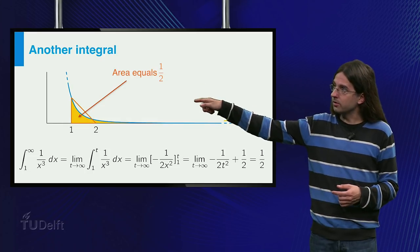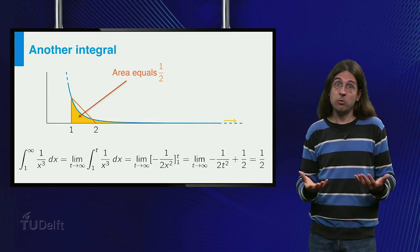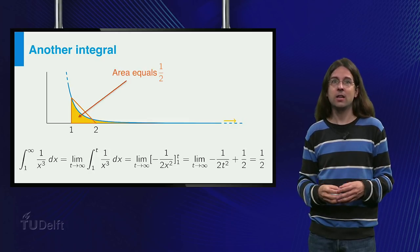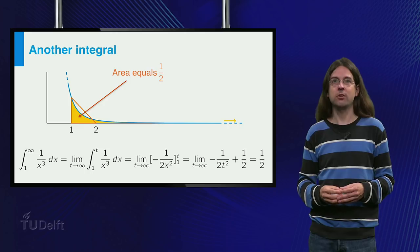The orange triangle on the slide has area one half as well, and it is not a stretch to imagine the yellow area being equal to the area of this triangle.